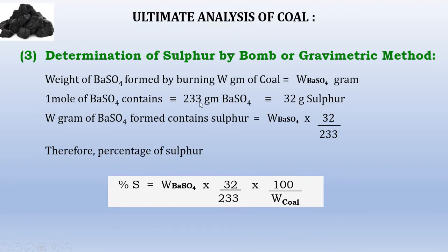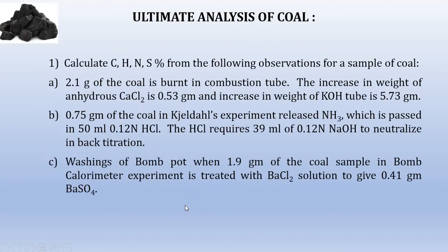Adding all the weights gives 233. So in 233 grams of BaSO₄ there are 32 grams of sulfur. Whatever barium sulfate is formed in the experiment, it contains sulfur equal to: weight of BaSO₄ × (32/233). This is the conversion factor that converts barium sulfate into sulfur. The percentage sulfur is: weight of BaSO₄ × (32/233) × (100 / weight of coal).